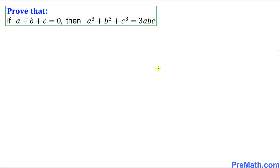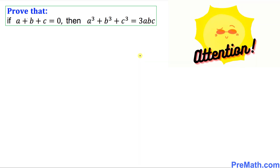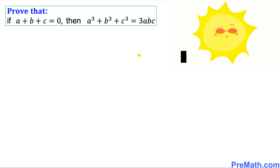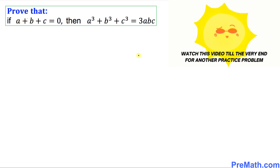Welcome to pre-math. In this video tutorial, we are going to prove that if a plus b plus c equals 0, then a³ plus b³ plus c³ equals 3abc. To get a full understanding of this topic, please watch this video till the very end for an additional practice problem.